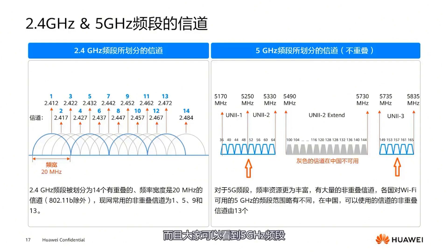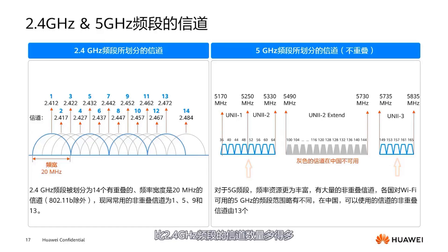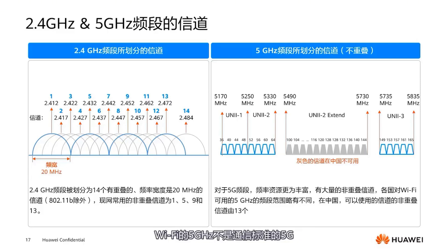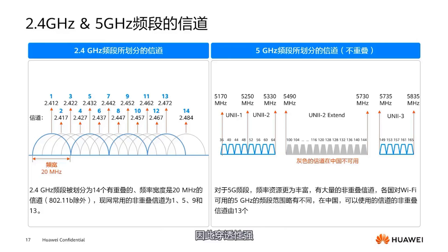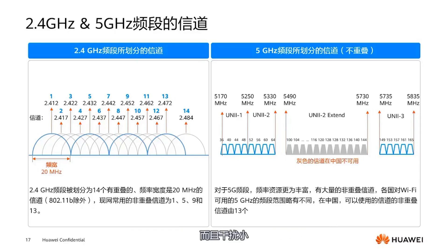The 5 GHz band has many more available channels compared to 2.4 GHz. Note that 5 GHz in Wi-Fi is not the cellular communication standard 5G, but refers to Wi-Fi operating in the 5 GHz band. In terms of frequency speed and interference resistance, it's much stronger than 2.4 GHz. However, because the 5 GHz band is at a higher frequency, its wavelength is shorter, giving it stronger penetration but weaker range compared to 2.4 GHz.